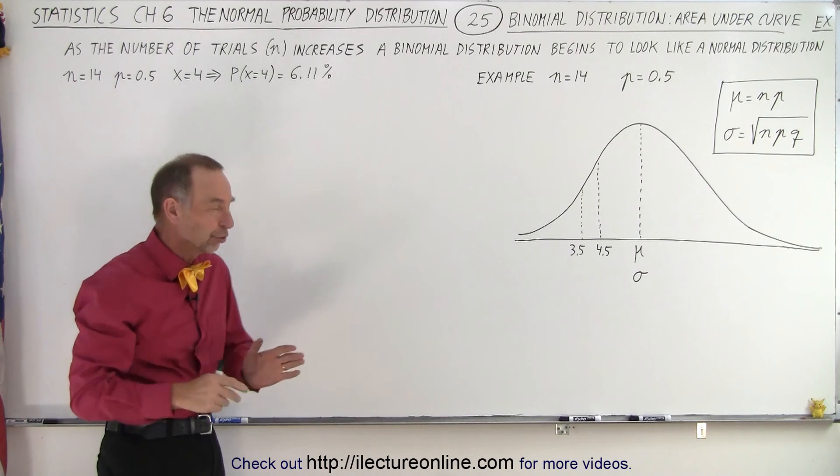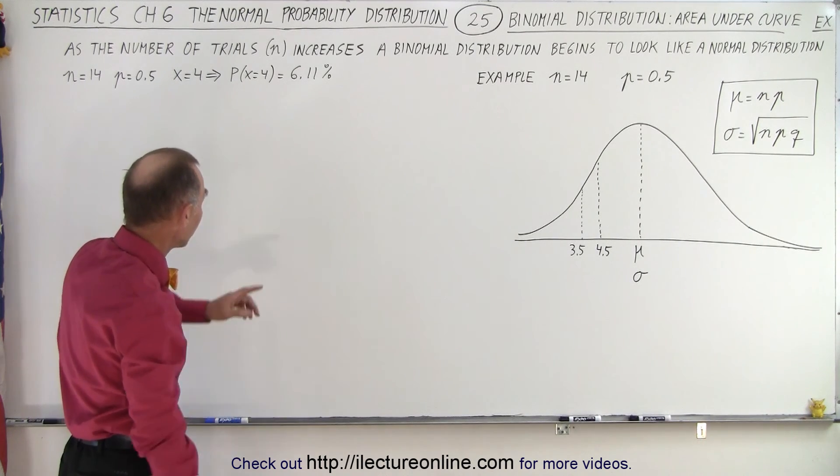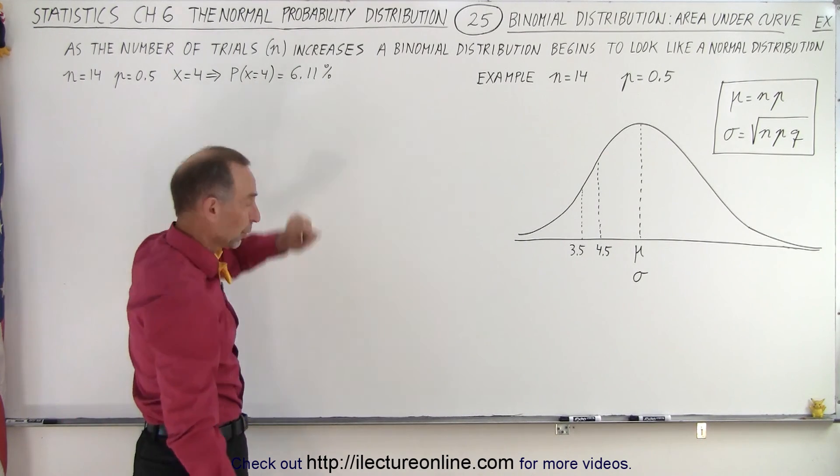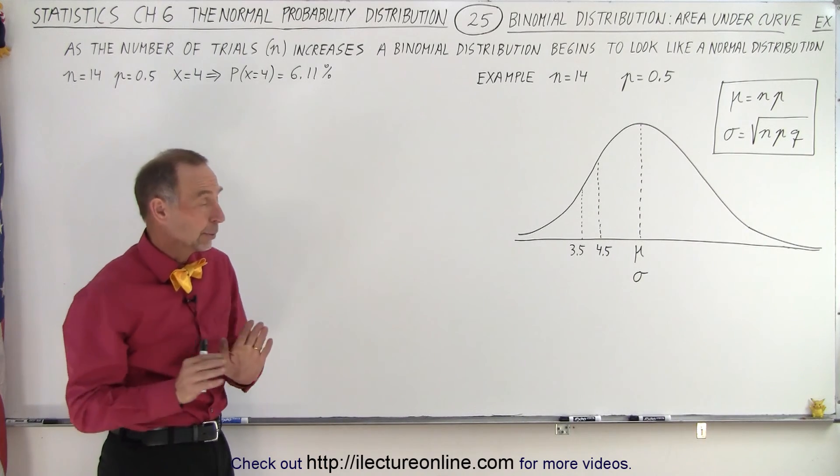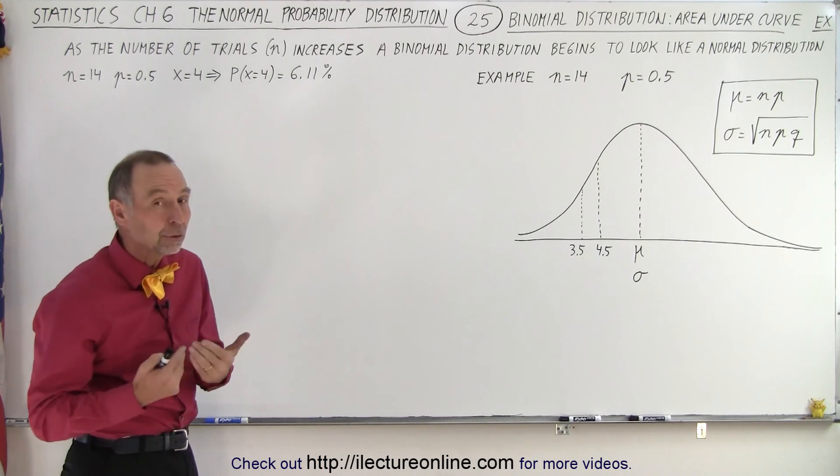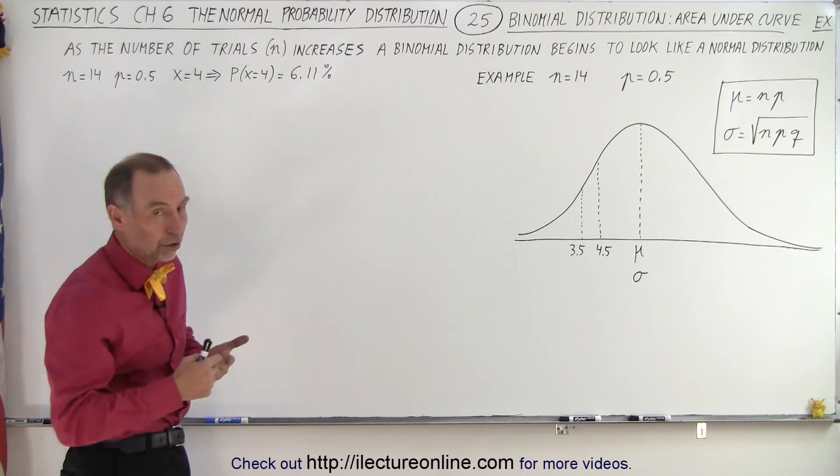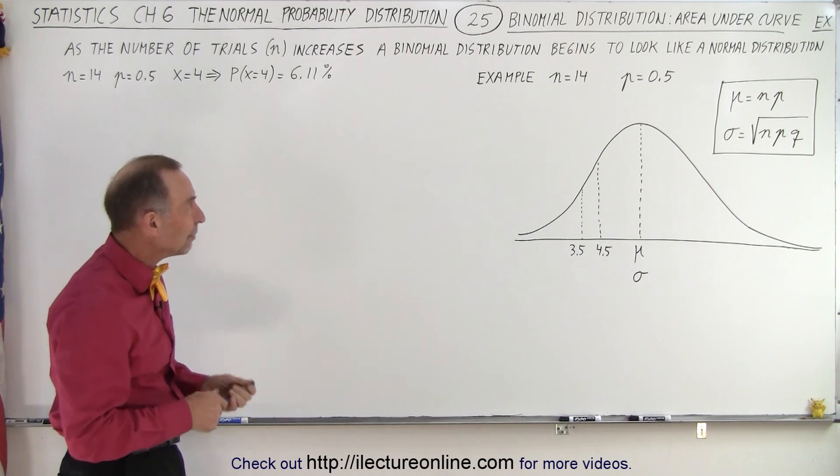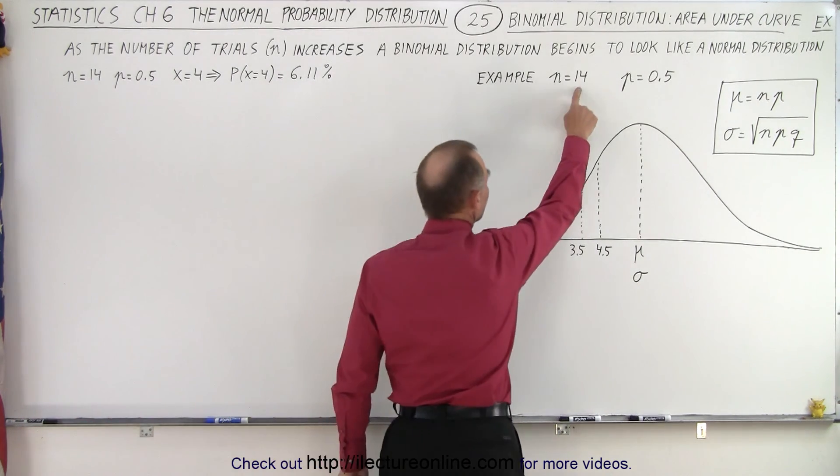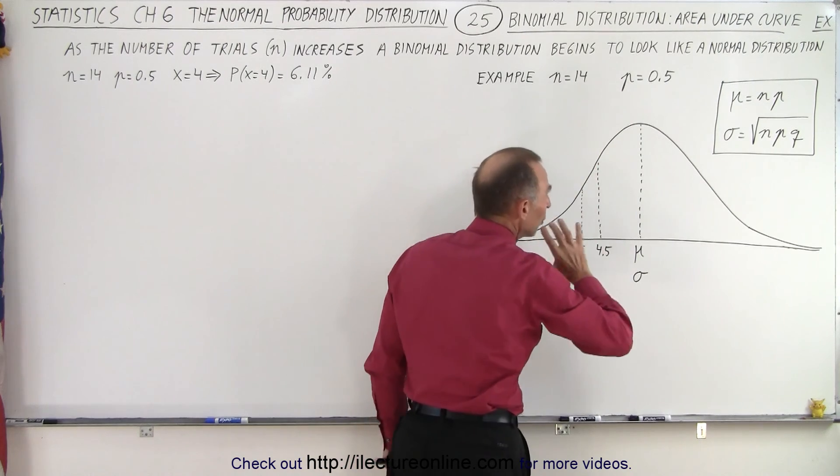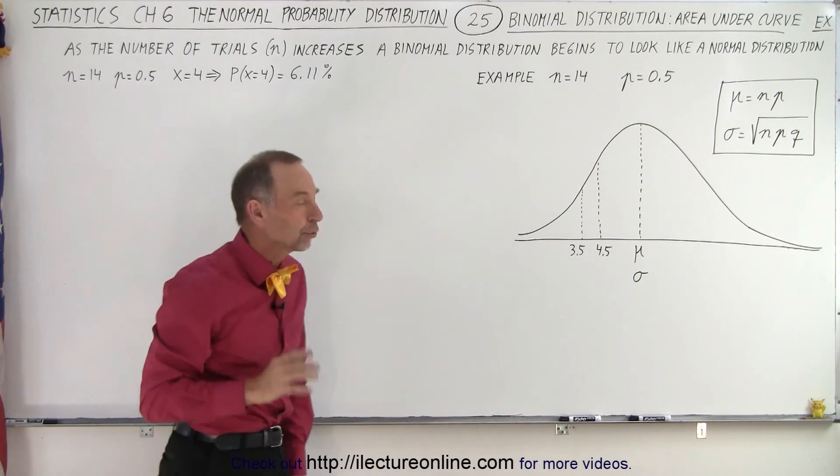This of course was for binomial distribution and it ended up being a probability of 6.11%. Now we're claiming that we could do the same thing using the normal distribution as long as n is large enough, and even with a small number like n being 14 we should get a result fairly close to that.